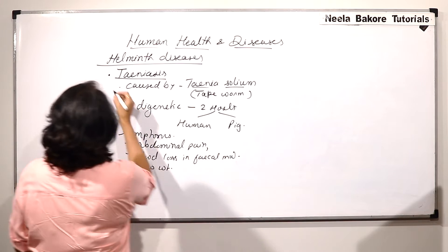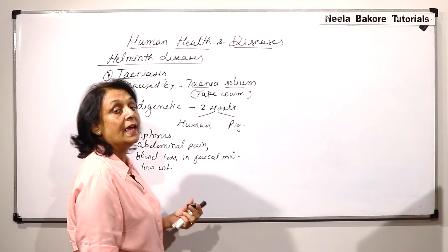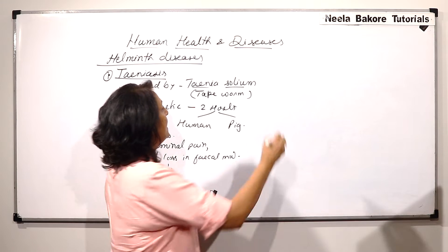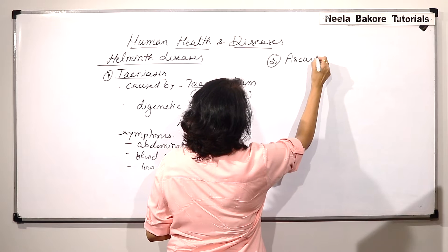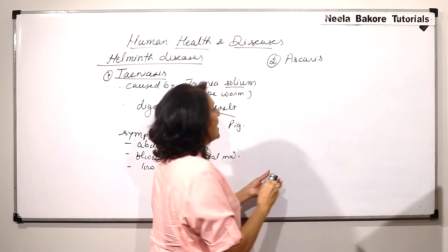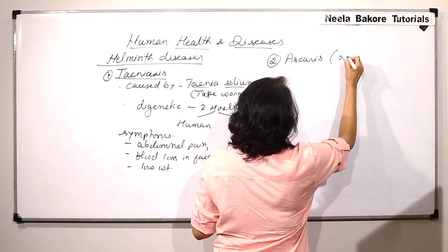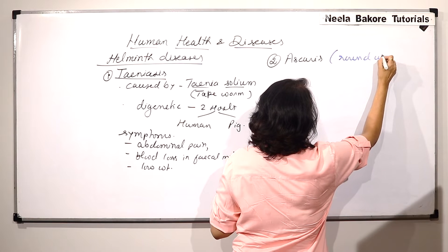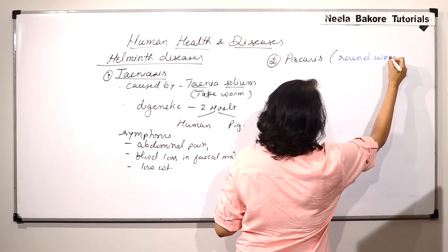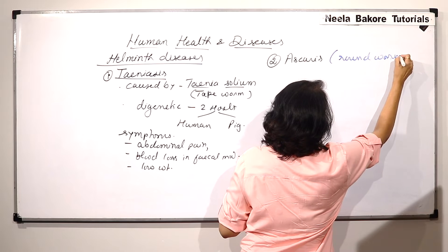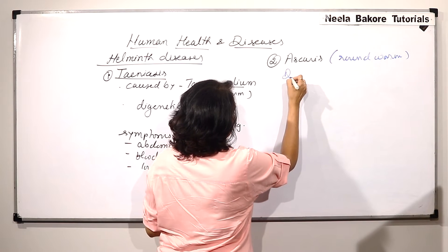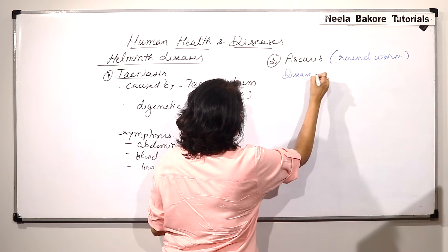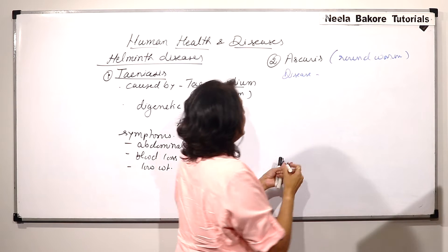The second one which is from Aschelminth is Ascaris which is commonly known as roundworm. And the disease is known as Ascariasis.